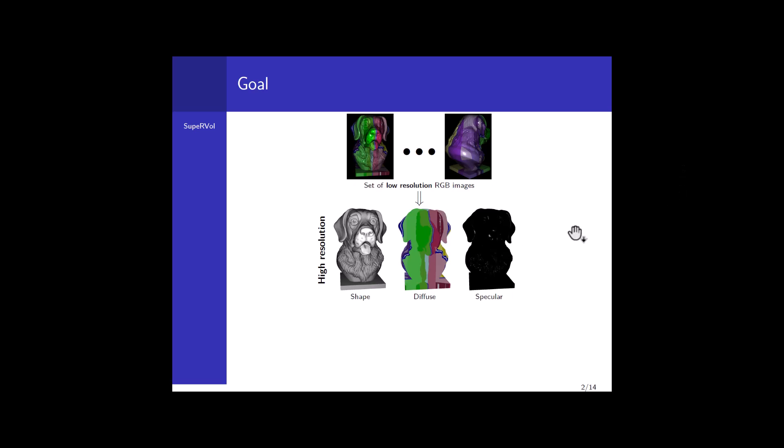The goal of our approach is summarized with this picture. We assume that we are given a set of low-resolution RGB images of a given object captured photometrically in a dark room with the light source located exactly at the camera position. The goal is to perform inverse rendering and from those images obtain high-resolution shape, diffuse, and specular parameters. By high-resolution, we mean these components can be rendered at higher resolution than the input while containing details barely visible or not visible at all in the input images.